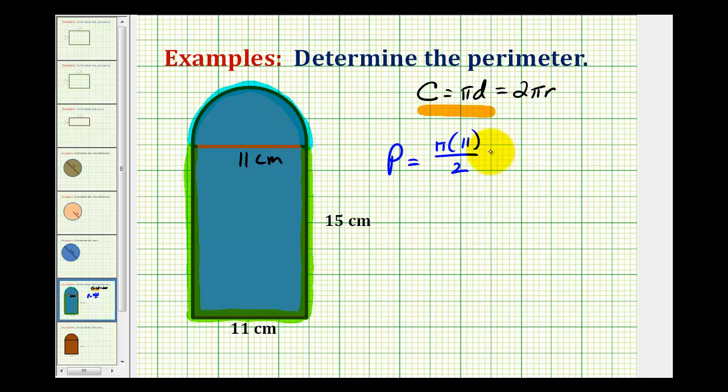Plus the length of the three sides. So if this is 15 centimeters, so is this. So we'd have two times 15 centimeters plus 11 centimeters. And again, notice how I'm leaving the units off until the very end.